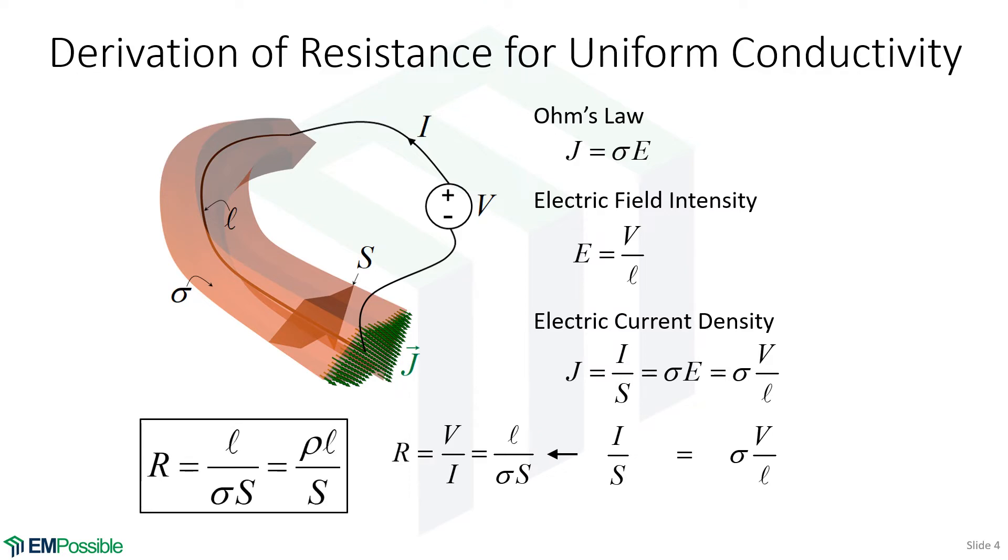So the final equation for the resistance of something that has uniform conductivity is simply the length of that device divided by the conductivity and divided by the surface area of the cross section.